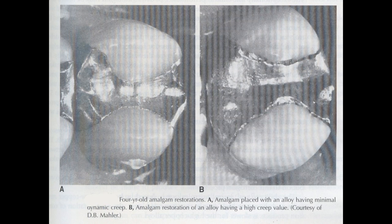MCQs on creep: dynamic creep is the deformation of the set amalgam. High copper amalgam alloy is least susceptible to creep — PGI exam question. Low copper amalgam alloy has the highest creep value. High copper amalgam is least susceptible while low copper amalgam has the highest creep value — these are two important and interrelated exam questions.